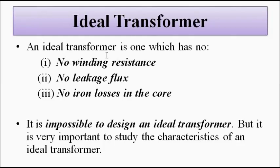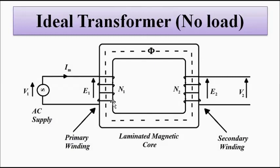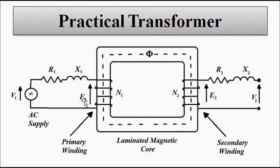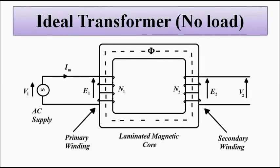The ideal transformer is one in which there is no winding resistance. The primary and secondary windings are not purely inductive in nature in a practical transformer — they have some amount of resistance in addition to inductance, represented by R and L. When it is purely inductive, it can be represented by only a simple inductor. An ideal transformer is purely inductive — only inductance, no resistance. So the first characteristic is: no winding resistance.